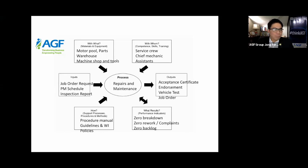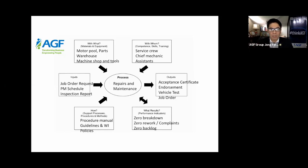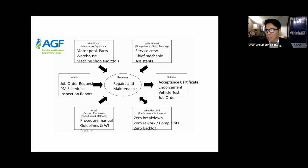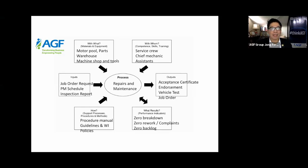For the output leg — the tail of the turtle — the outputs for a repairs and maintenance procedure would include an acceptance certificate signed by the end user, endorsement documents, vehicle test results, and a signed or accomplished job order or accomplishment report. These represent the completed deliverables of the process. With that, our Turtle Diagram is finally complete.